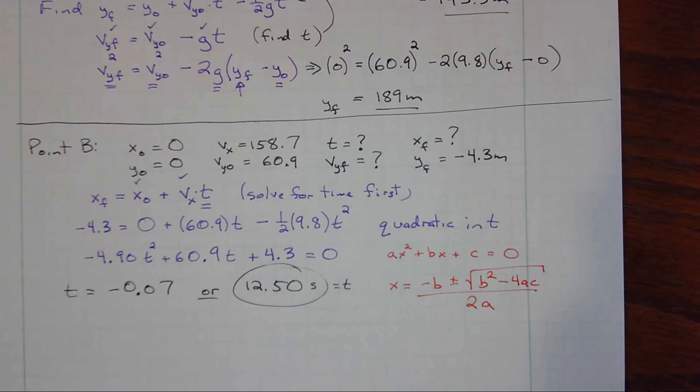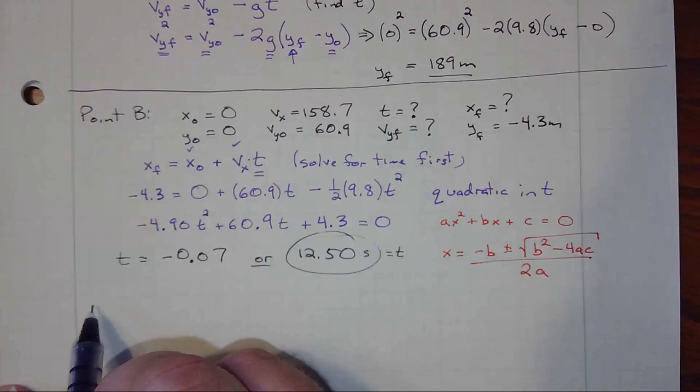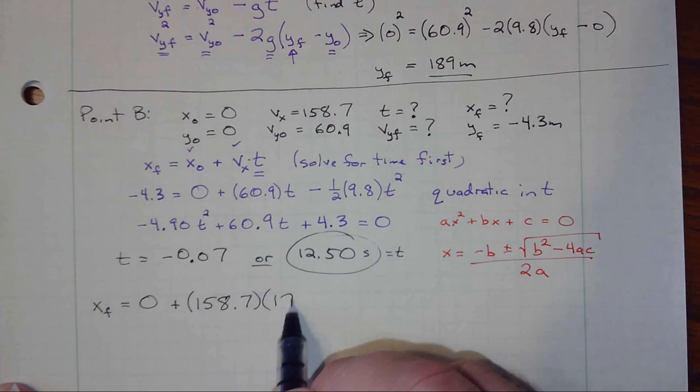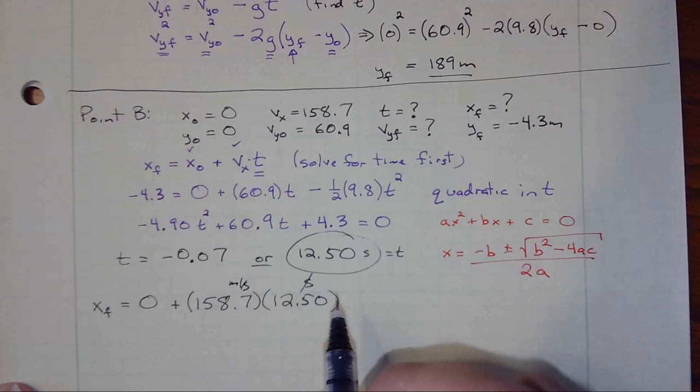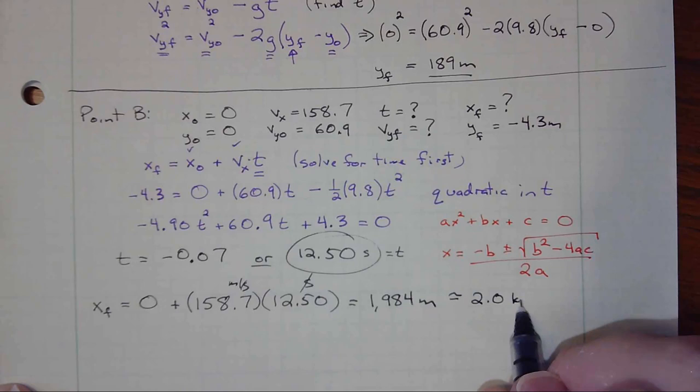Having found t equals 12.5 seconds, we can go to our x position equation. x_final equals x_initial plus vx times t, so 0 plus 158.7 times 12.5. The seconds cancel to give distance in meters, giving us 1,984 meters — about 2 kilometers. Pirates can fire quite a distance away! We already know where it lands and how long it takes.